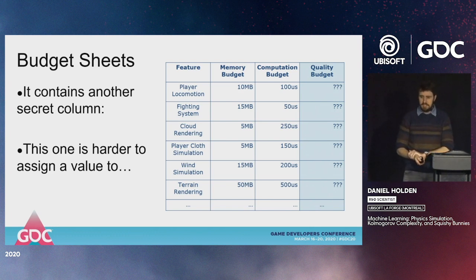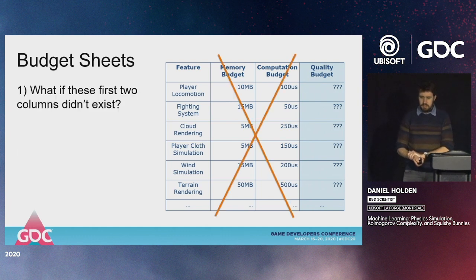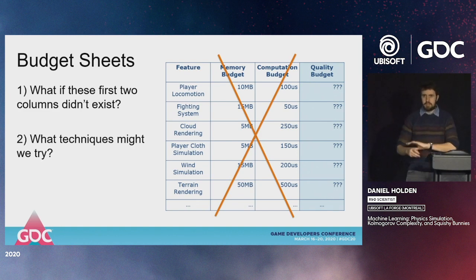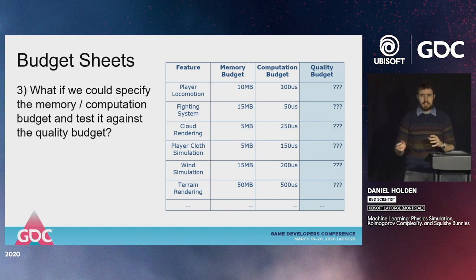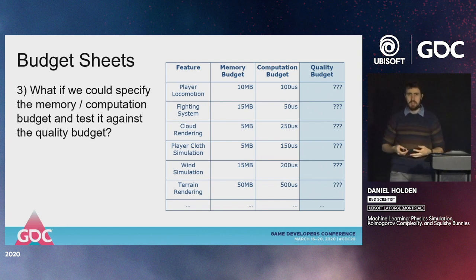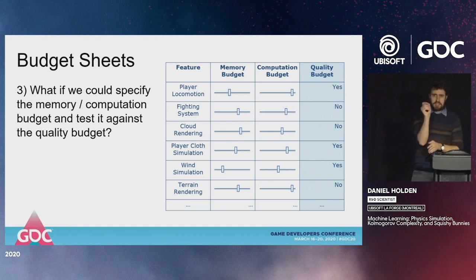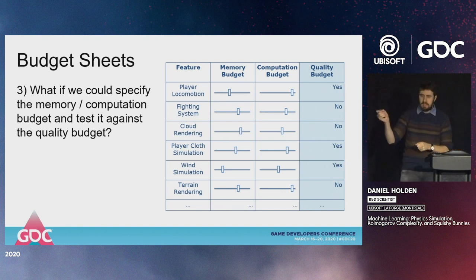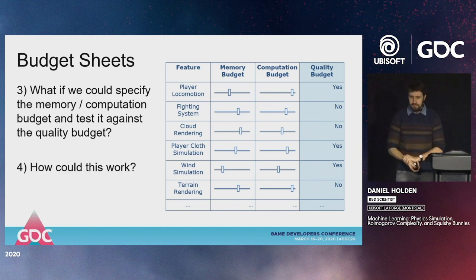Thinking about these budget sheets, we asked ourselves two questions. One: what if the memory and computation columns didn't exist? What might we do to achieve the highest possible quality, perhaps borrowing techniques from the film industry? And secondly, what if we could specify our memory and computation budget and automatically test it against a quality budget — like sliders where adjusting computation might lower quality?